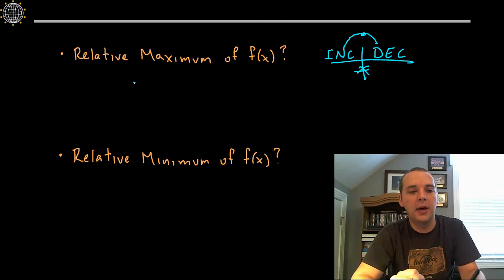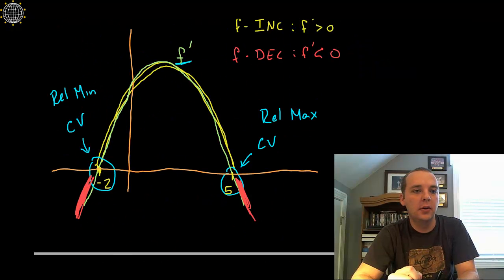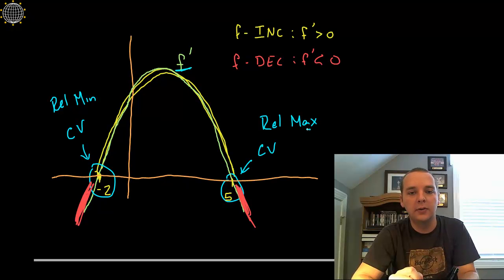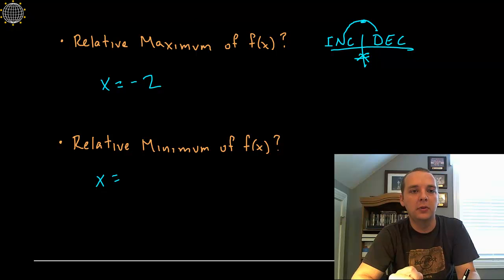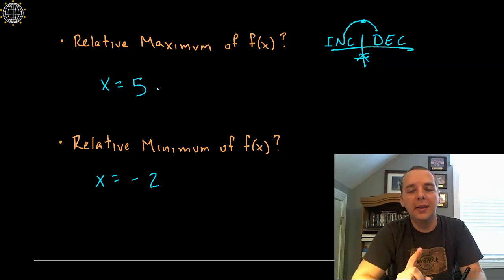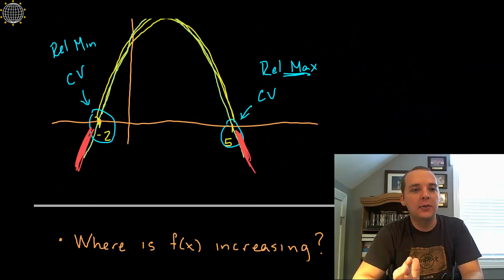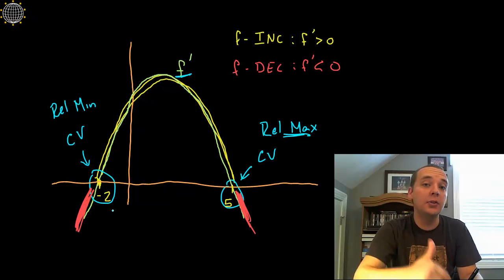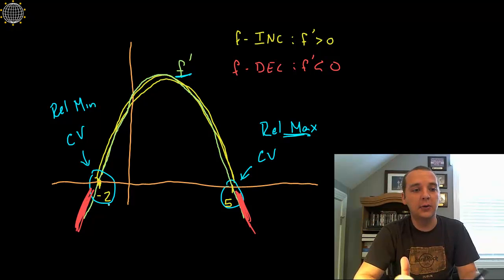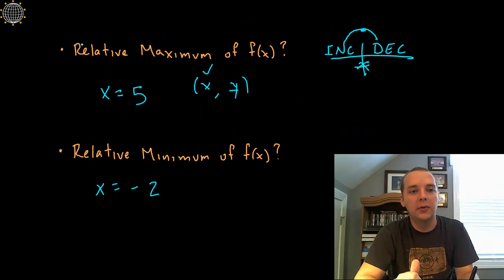So we have a relative minimum at x equals negative 2, and a relative maximum at x equals 5. One thing we unfortunately can't do — often your instructor will want the x,y coordinate. Well, we got the x, but if this is a graphical example, there's really no way to discern what the y-value for the original function is at negative 2. All you know is that negative 2 is a critical value, but you don't know how high is high and how low is low. So typically they'll just ask for the x-coordinate for the relative maxes and mins.